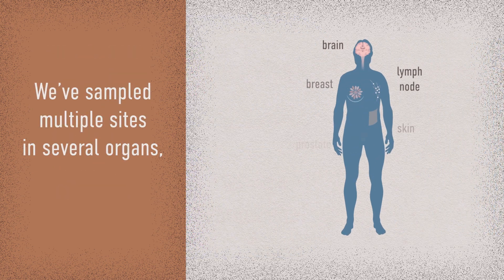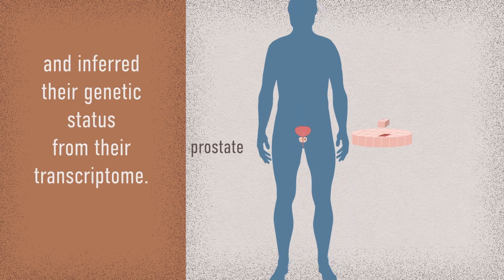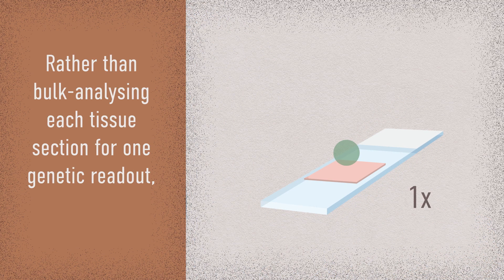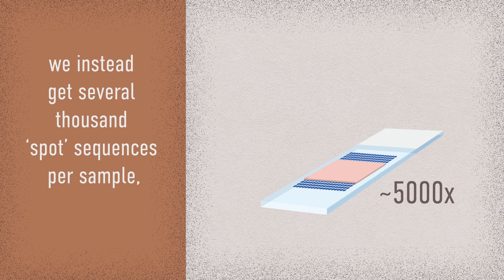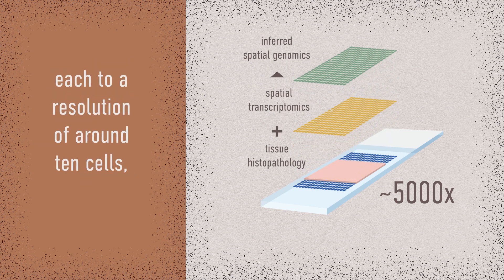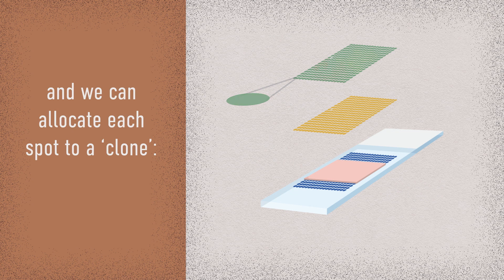We've sampled multiple sites in several organs and inferred the genetic status from their transcriptome. Rather than bulk analysing each tissue section for one genetic readout, we instead get several thousand spot sequences per sample, each to a resolution of around 10 cells, and we can allocate each spot to a clone.